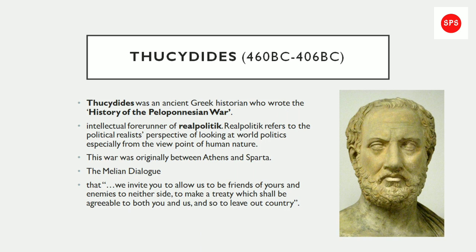The main part of this war is the Melian Dialogue, when Athens attacked Melos and proposed that they surrender. But the council of Melos refused and said that they wished to be friends of Athens and enemies to neither side.